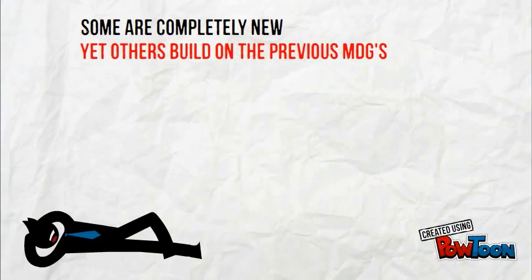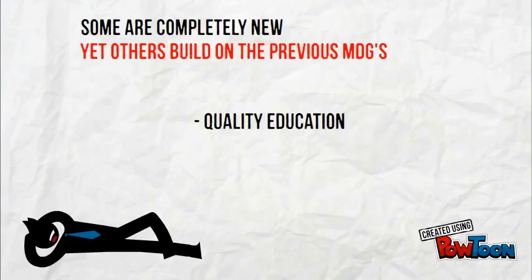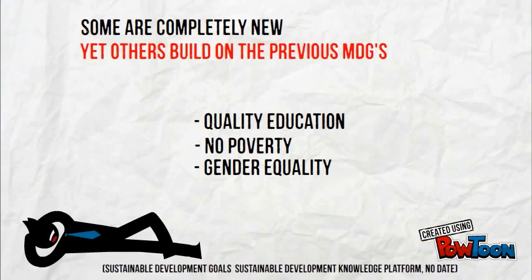For example, quality education: ensure inclusive and equitable quality education and promote lifelong learning opportunities for all. No poverty: end poverty in all of its forms. Gender equality: achieve gender equality and empower all women and girls.